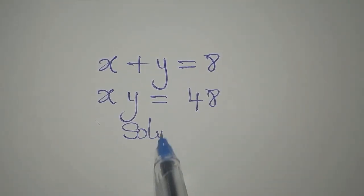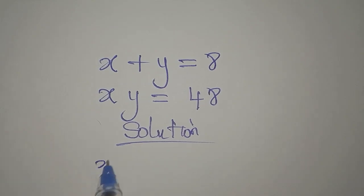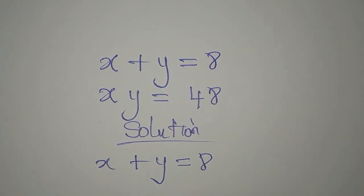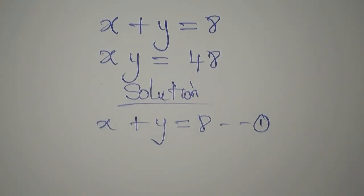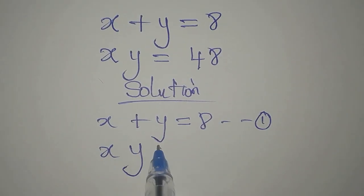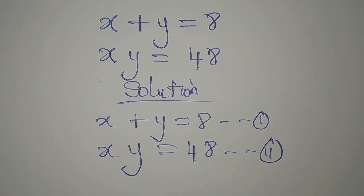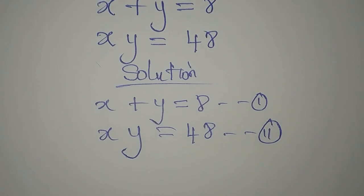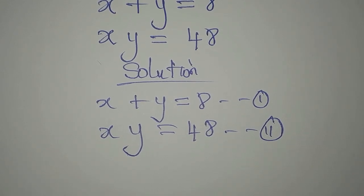Hello everyone. Let's provide a solution to this problem: x plus y equals 8. We are going to solve this problem simultaneously, so this will be our equation 1. Then we have xy equals 48; this will be our equation 2. Now let's deal with this — we'll have equation 3 since we are going to use the substitution method.